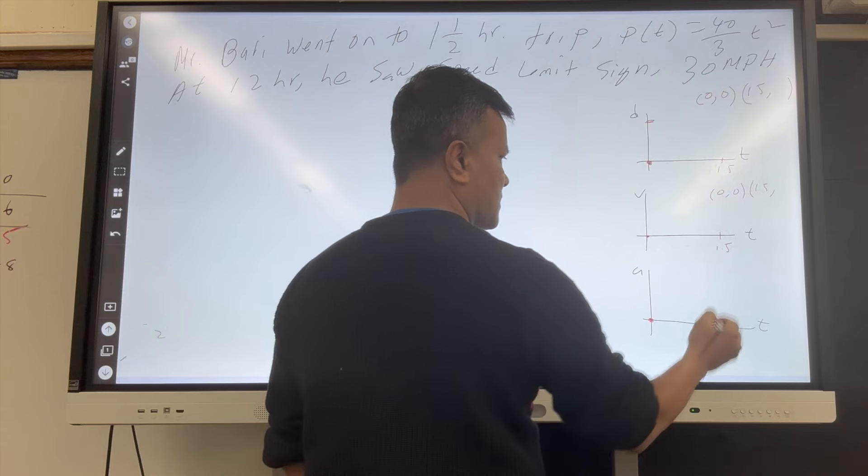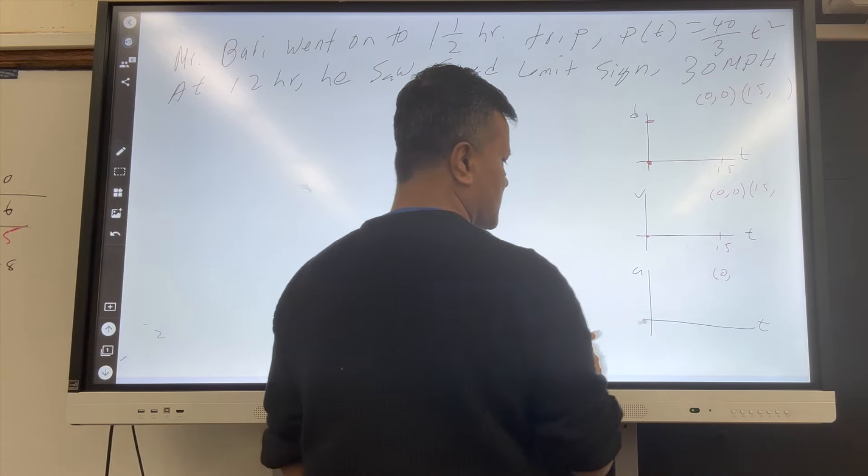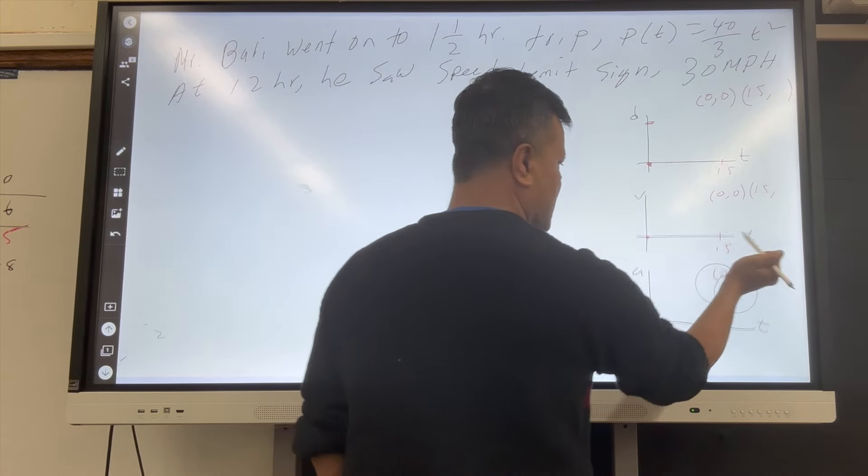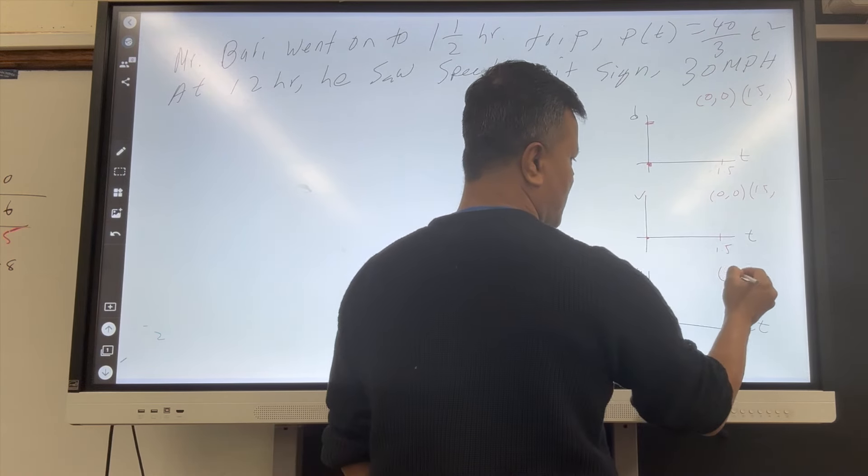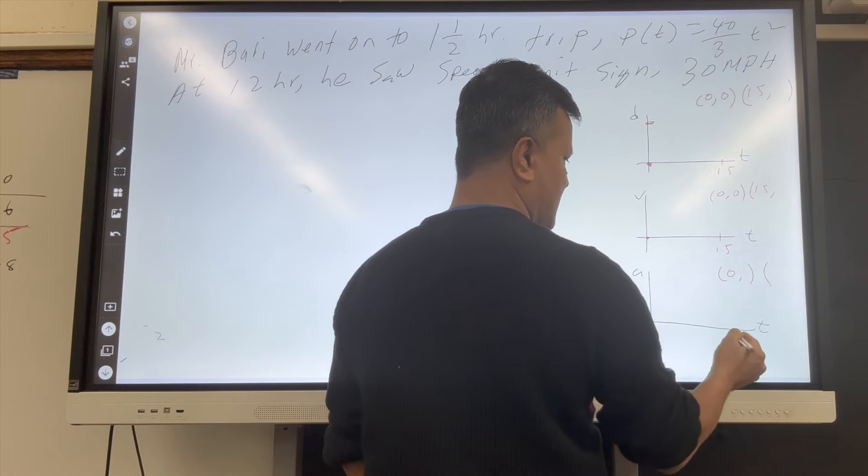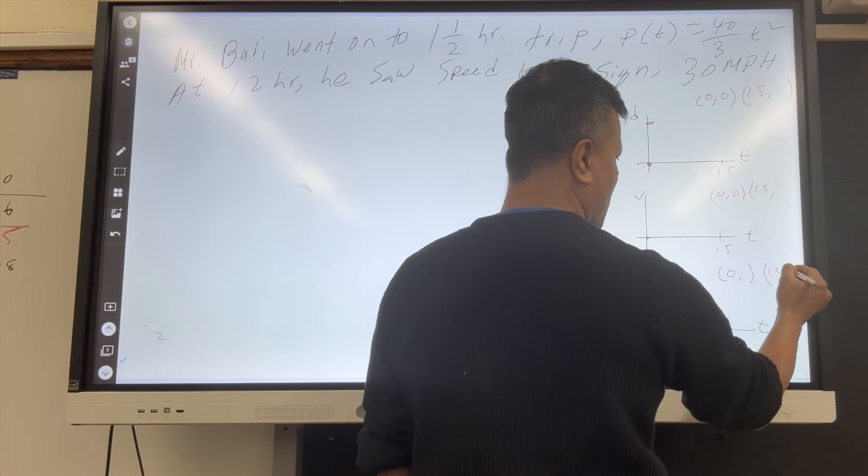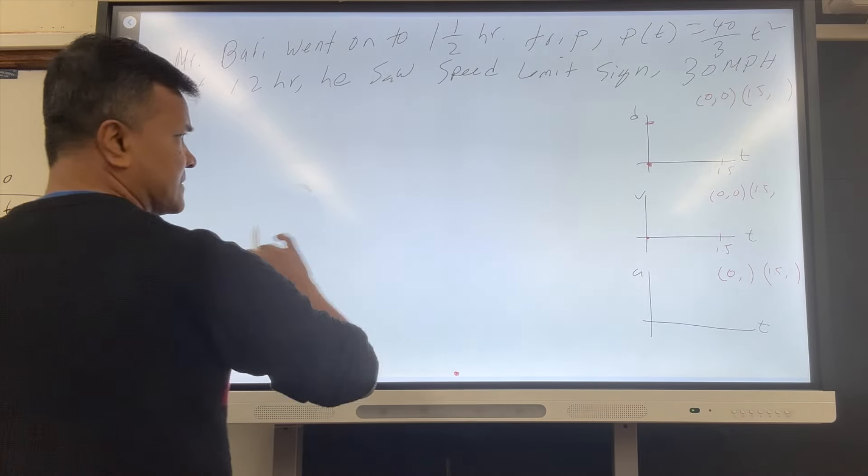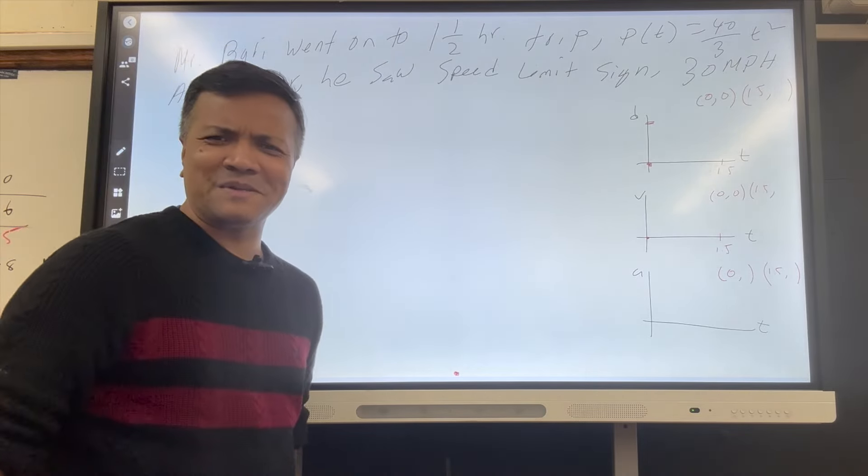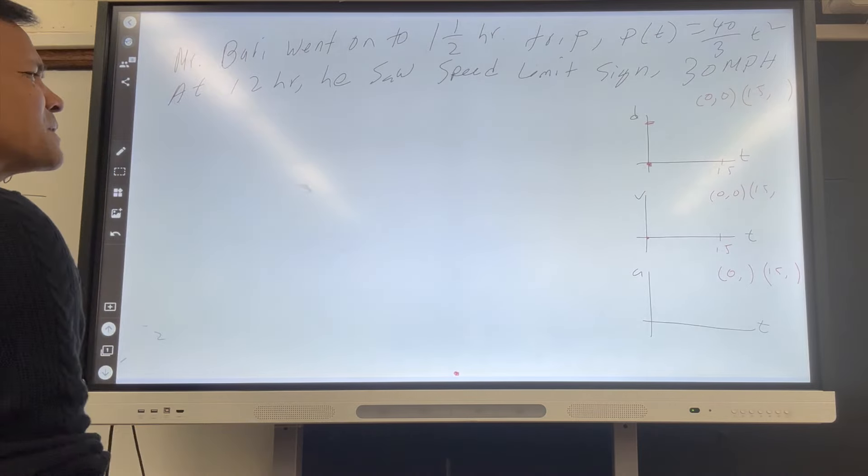This is not 0, 0. This is 0 comma whatever, and then this is 1.5 comma whatever, because at 0, the acceleration, acceleration is constant. That is a negative mistake to the other one.